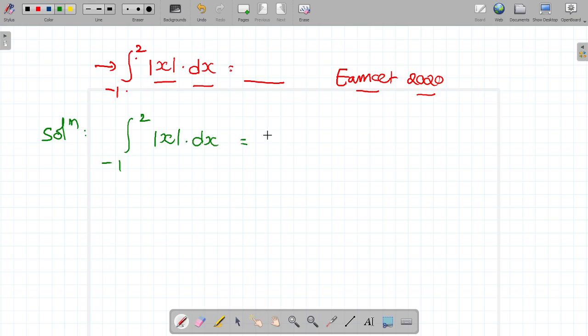It can be rewritten as integral minus 1 to 0, minus x dx, plus integral 0 to 2, x dx. So how can you write like this?